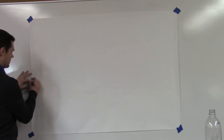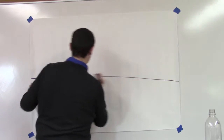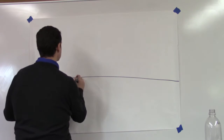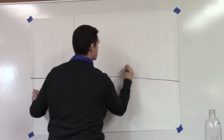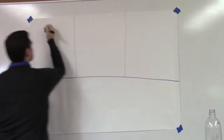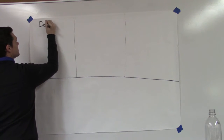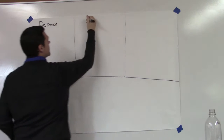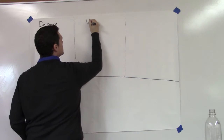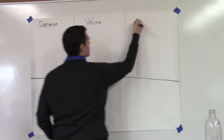Now I'm going to go over the three main types of units we use in the metric system. They have to do with distance, volume, and mass.